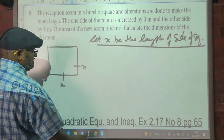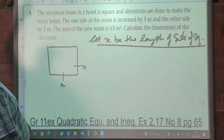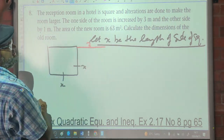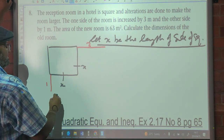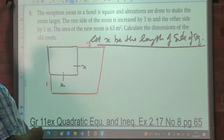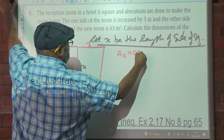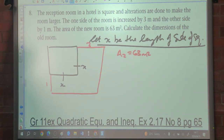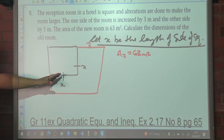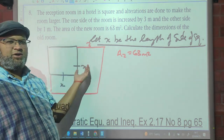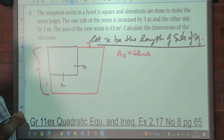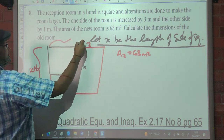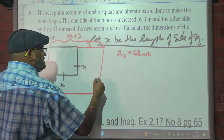So here's X and of course the other side is X as well. One side is increased by 3, and the other side by 1. The area of the new room is 63 square meters. Calculate the dimensions of the original room — so we must calculate X. Since it's a square we just need to solve X. The new dimensions are X plus 1 and X plus 3.